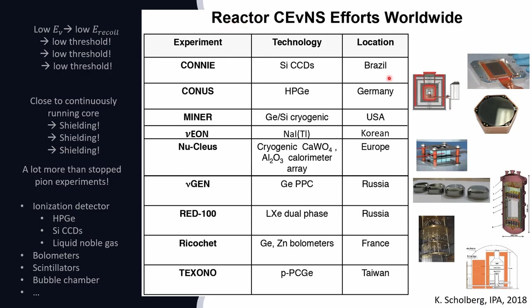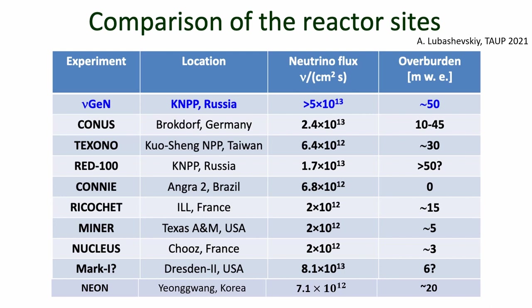The reactor-based CEvNS experiments are as diverse as the accelerator-based ones. As mentioned before, the low neutrino energy results in very low nuclear recoil energy, so low-threshold detectors are key to their success. Another disadvantage compared to accelerator-based sources is the continuously running reactor core — we cannot use time coincidence to reduce background, making shielding very important. Many new technologies are used to reduce energy thresholds. Before discussing the detectors, let's compare their sites: the higher the neutrino flux, the better, and the greater the overburden, the less cosmic ray contamination.